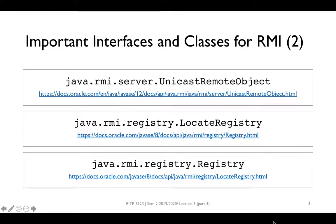The second part of important interfaces and classes comes from the packages java.rmi.server and java.rmi.registry. UnicastRemoteObject is a class that will be used in the server object we have seen in the RMI architecture, and it provides concrete implementation to the implemented interface. Both Registry and LocateRegistry will be used by the RMI client and RMI server.